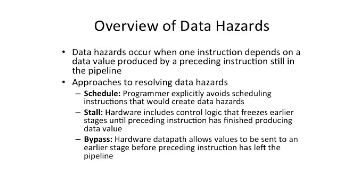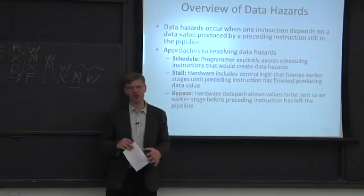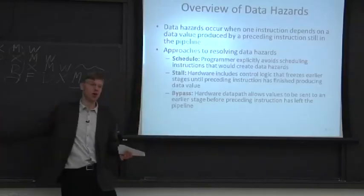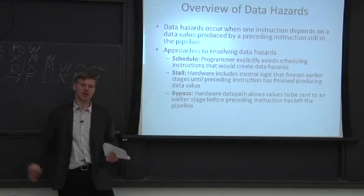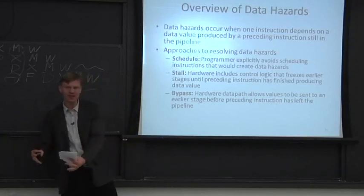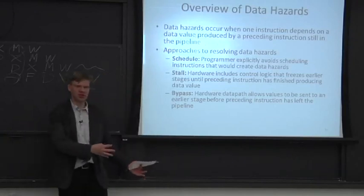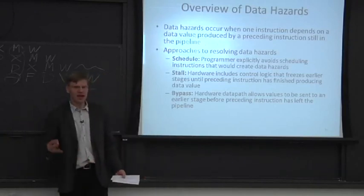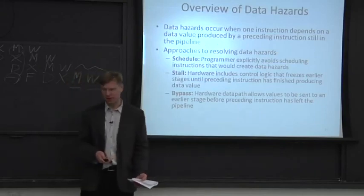Another solution is you can bypass. You add extra hardware to your data path, and that hardware sends the value as soon as it gets created. So you may not have to wait for it to get to the end of the pipeline — if the data value is made early, you can forward it to the instruction which needs it, though that adds extra hardware and complexity.